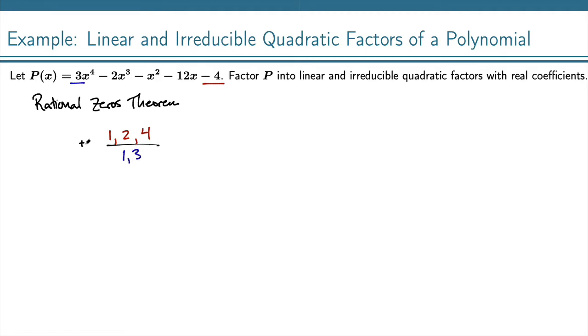And of course we do plus or minus. So we look at each of these possible divisions: 1 over 1 is 1, 2 over 1 is 2, and 4 over 1 is 4, and then 1 over 3, and 2 over 3, and 4 over 3. And of course it's plus or minus all of those.